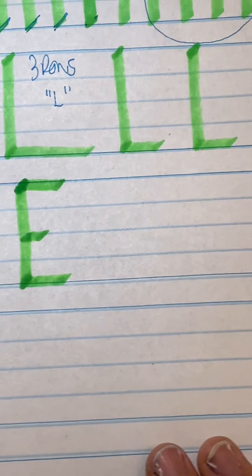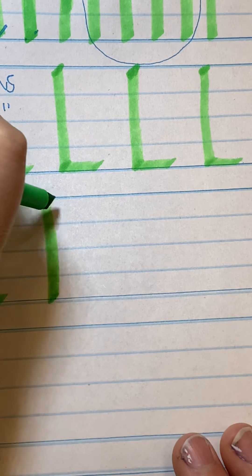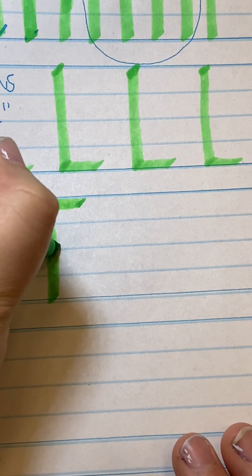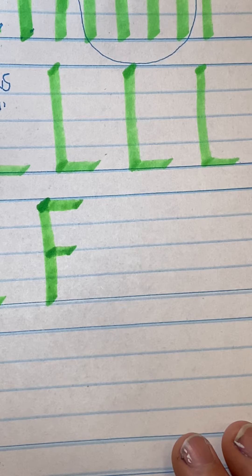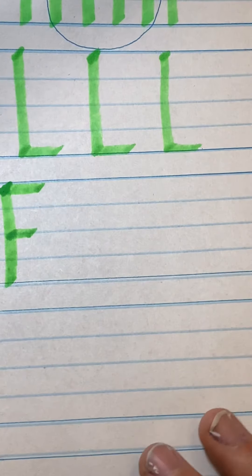So an F. Do three rows of E's, and then the F is like the E, only there's no bottom. So you already know how to do I, L, E, F. That's good for the first day.